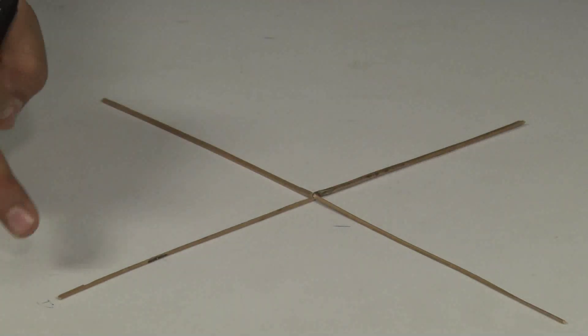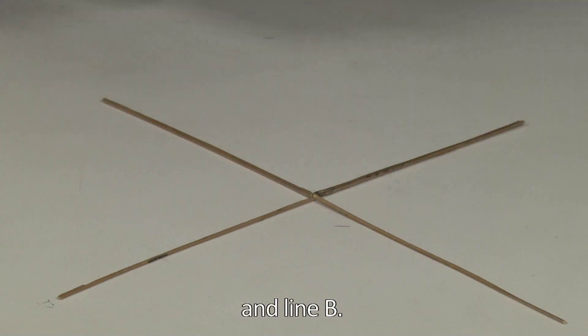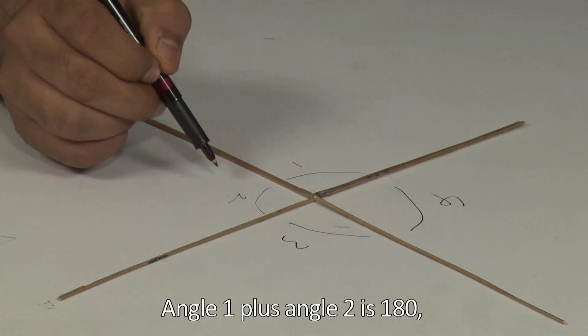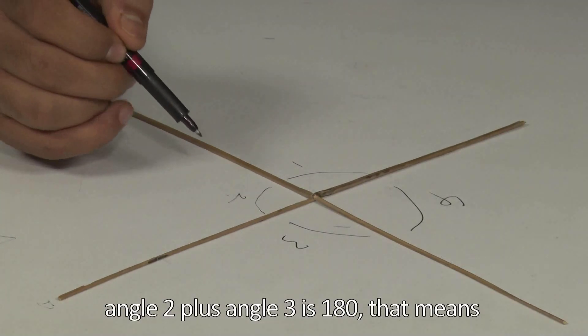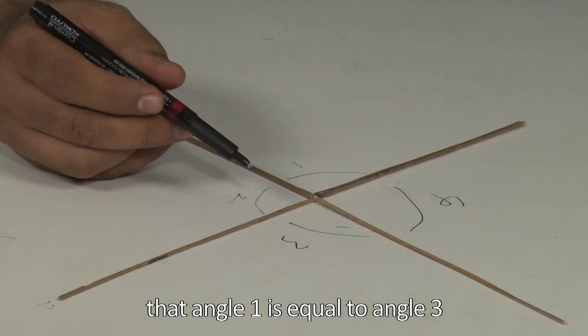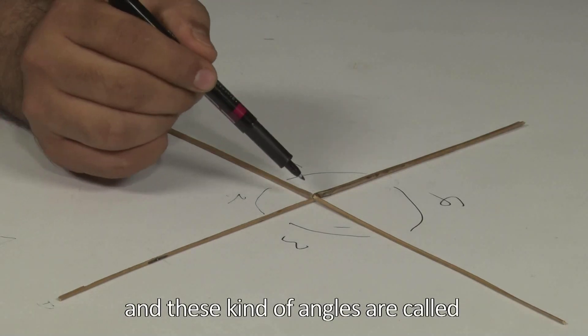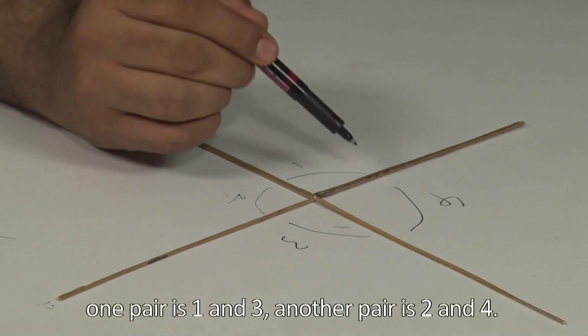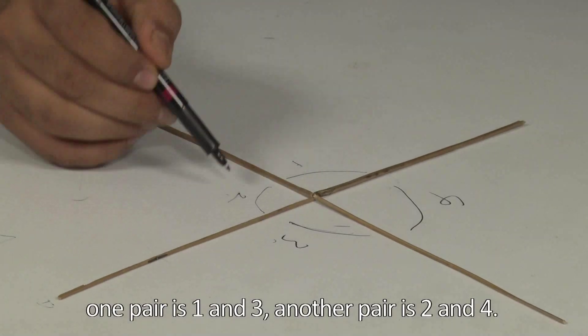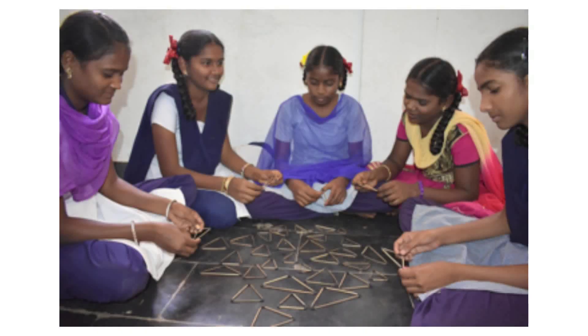label them line A and line B. All right. Angle 1 plus angle 2 is 180. Angle 2 plus angle 3 is 180. That means angle 1 should be equal to angle 3, and these kind of angles are called vertically opposite angles. One pair is 1 and 3, another pair is 2 and 4.